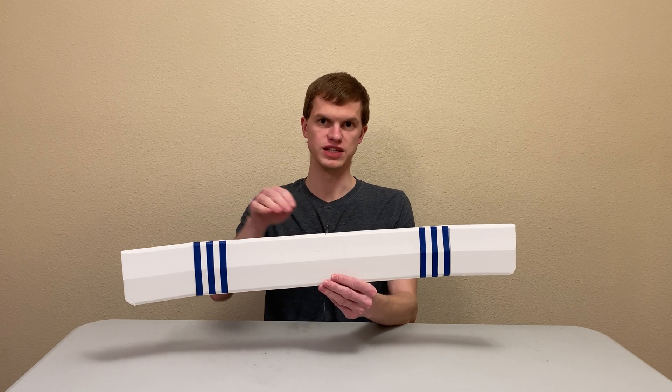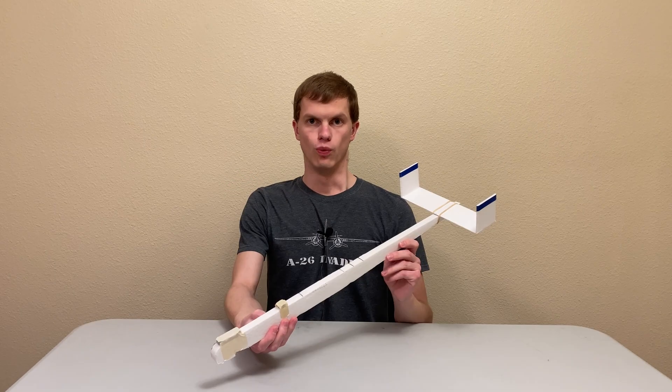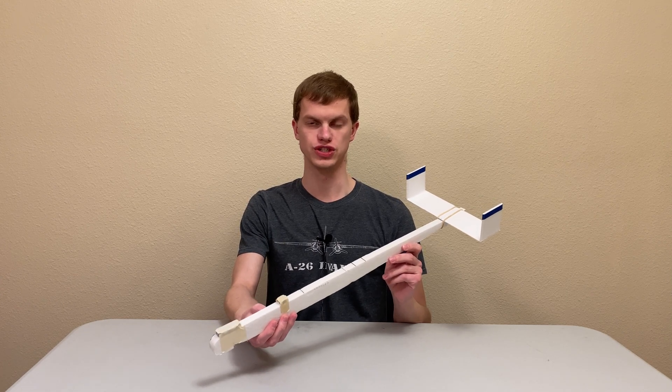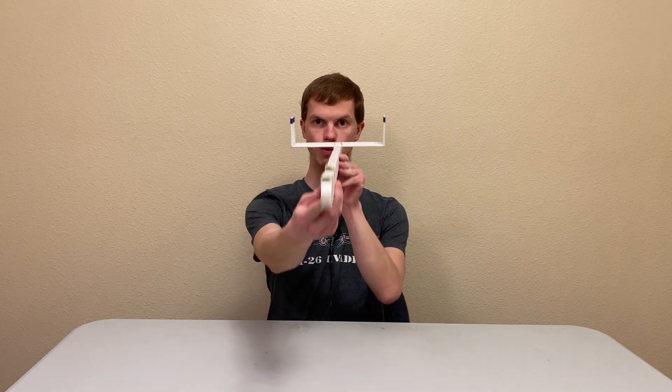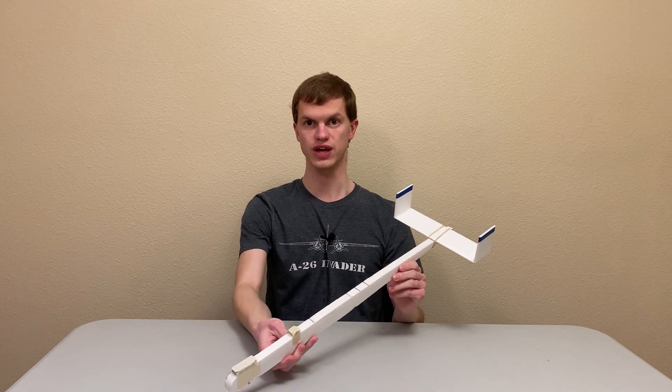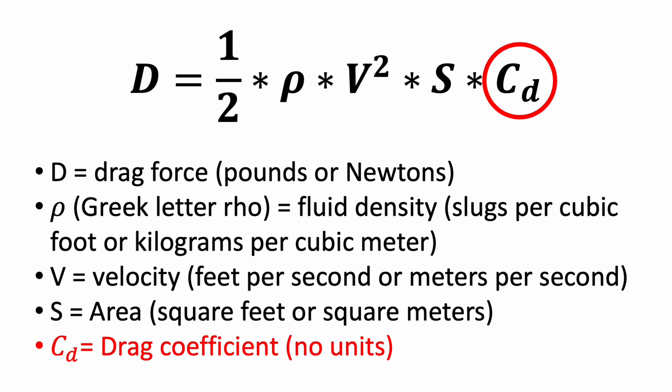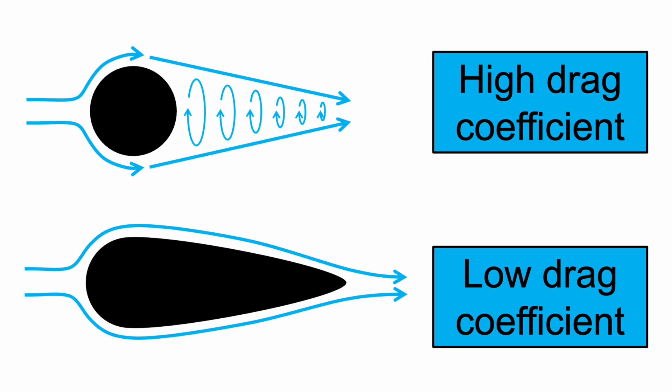When calculating drag on the wing, the area is usually chosen as the wing area seen from directly above the airplane. For the fuselage and tail, the area used is the cross-sectional area seen from directly in front of the plane. The last parameter is the drag coefficient, a number that captures the math we can't easily calculate and must be measured in wind tunnels or estimated using computer simulations. It depends on the shape and orientation of the object.